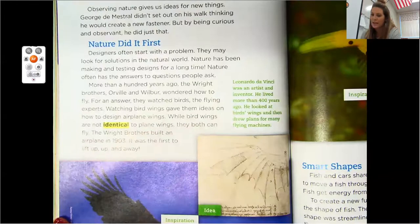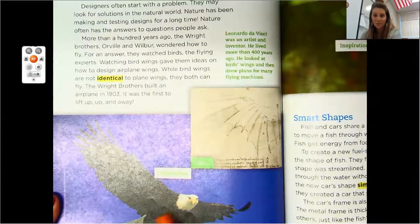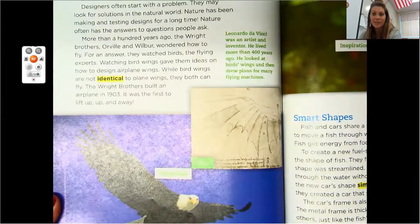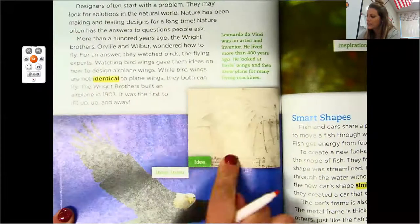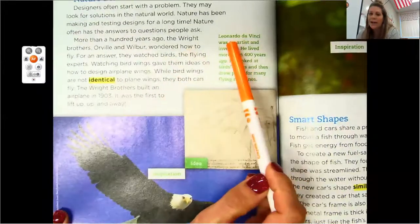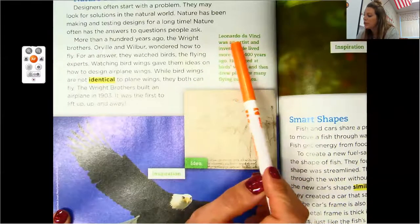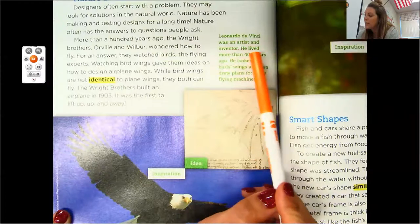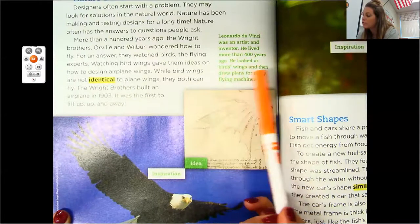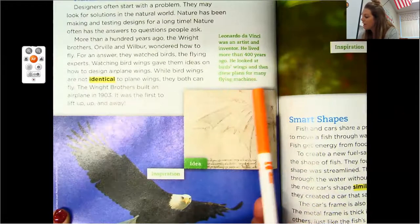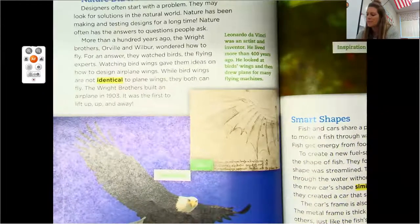So here we've got our inspiration. So are we noticing a common theme, a main idea here? And then here's their idea. And look here at our, you remember what this is called? Our caption. Leonardo da Vinci was an artist and inventor. He lived more than 400 years ago. He looked at bird wings and then drew plans for many flying machines. So what are we noticing here? What is the main idea? Were those two pages all about George?